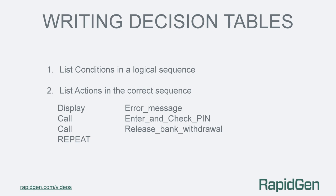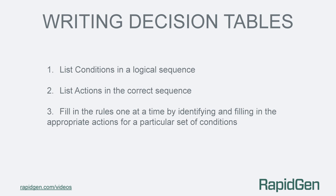For a particular rule, if the repeat is actioned before the other actions then what follows cannot be performed. The third instruction in writing decision tables is to fill out the table entries one rule at a time by evaluating the conditions and associated actions.